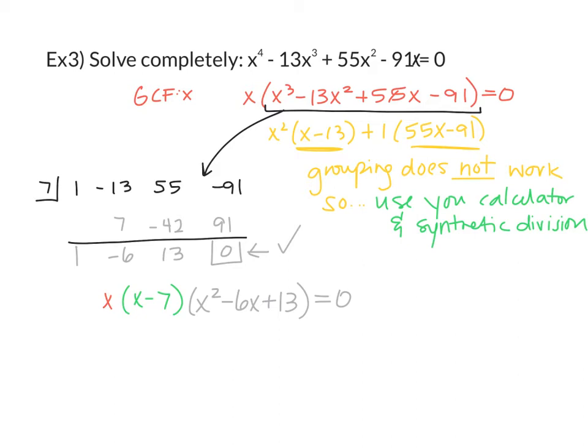All right. So the last thing we need to do is see if we can finish breaking down this X squared minus six X plus 13. And we can try factoring 13 and negative six, but there's not going to be anything we can come up with, which you guessed it means we're going to have to do quadratic formula. So again, I'm going to pause the video and go ahead and start quadratic formula on this problem for us.